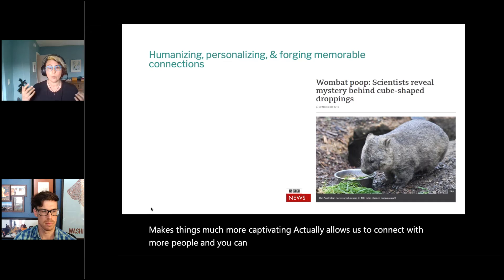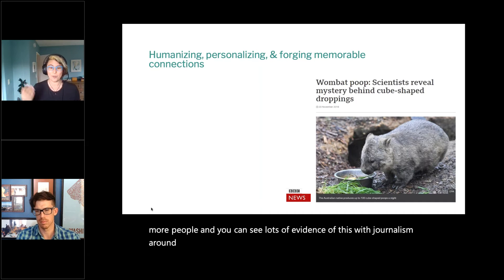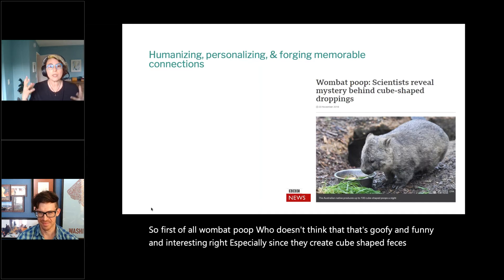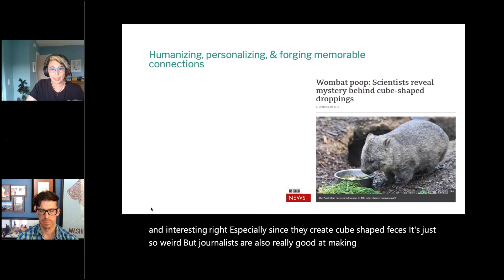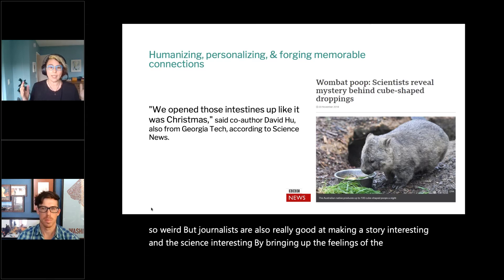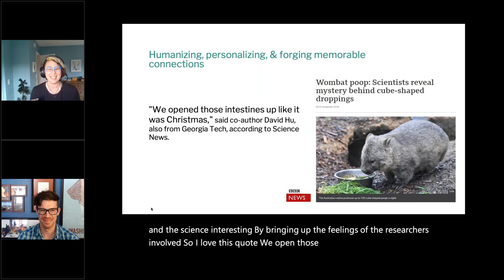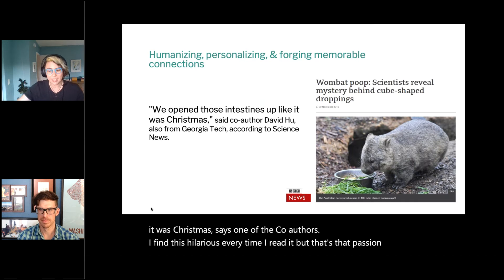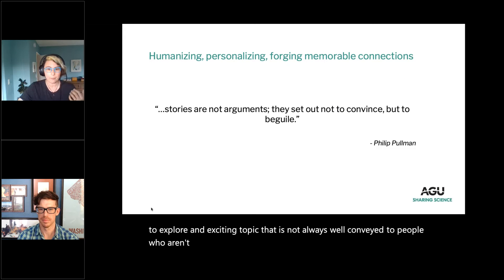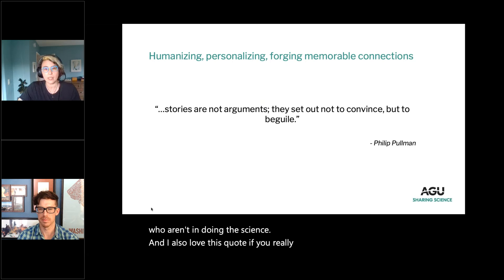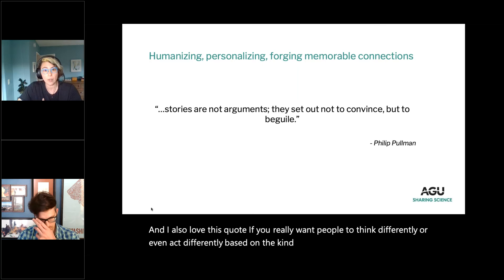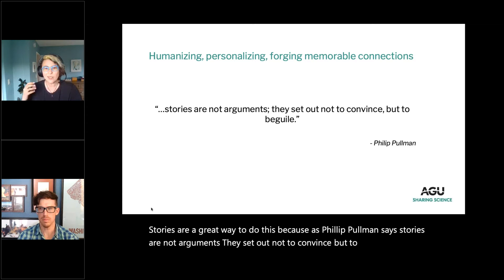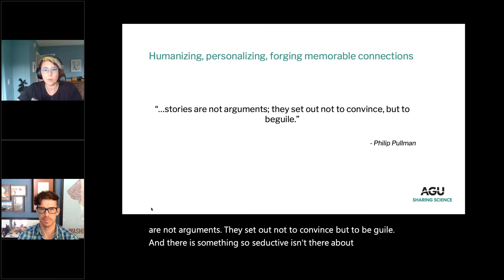You can see lots of evidence that personalizing makes things captivating in science journalism. Take wombat poop — especially since they create cube-shaped feces, it's just so weird. But journalists are really good at making the science interesting by bringing up the feelings of researchers. I love this quote: 'We open those intestines up like it was Christmas,' says one co-author. That passion for exploring an exciting topic isn't always well conveyed. And as Philip Pullman says, 'stories are not arguments — they set out not to convince but to beguile.'